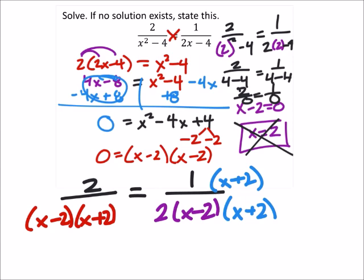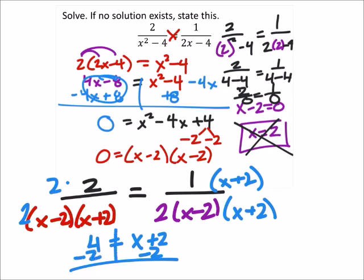On the other side, it already has x minus 2 and x plus 2, so I just need to multiply these both by 2. So that would give us 4 equals x plus 2. Subtracting 2 from both sides, we would see that x equals 2 here, but we already checked that that doesn't work.